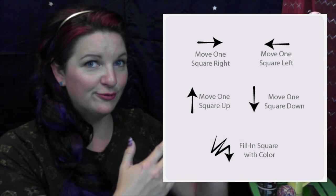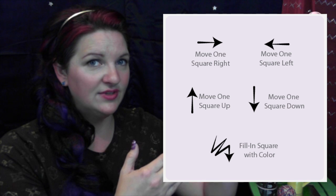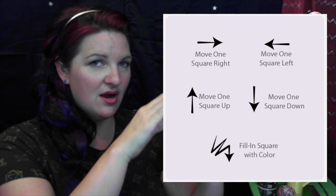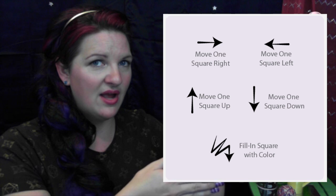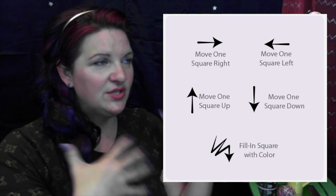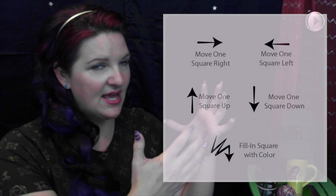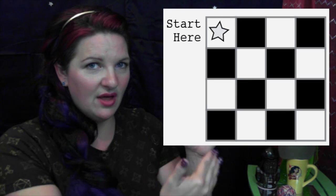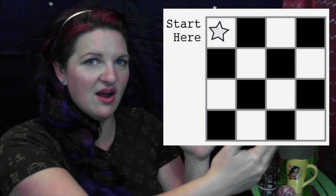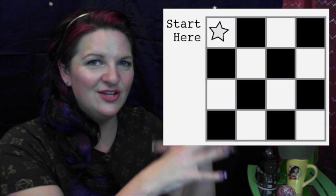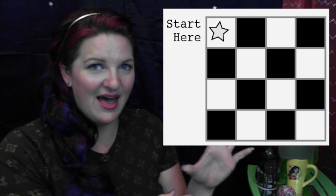You can use the steps provided: move right one square, move left one square, move up one square, move down one square, and fill in square with color. For example, you could say: move right one square, fill in square with color, move right one square, move right one square, fill in square with color, move down one square, move left one square, fill in square with color — and get them to match your image.